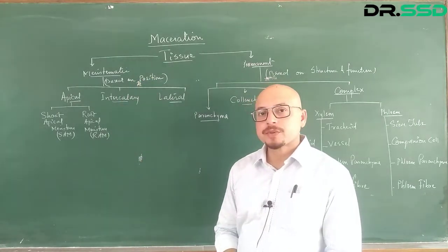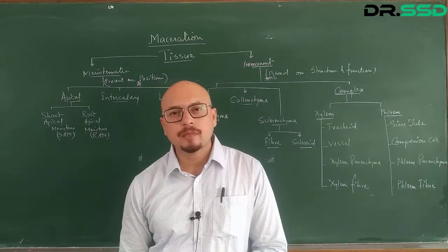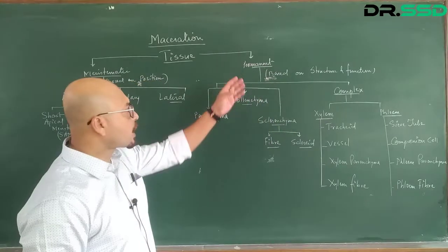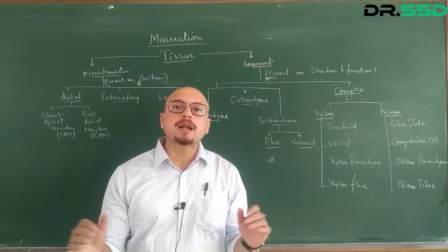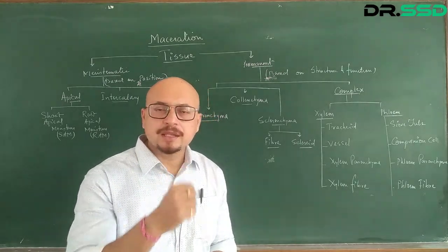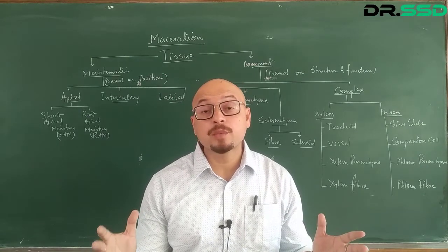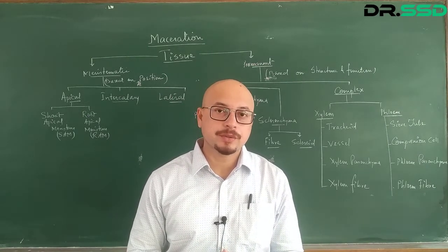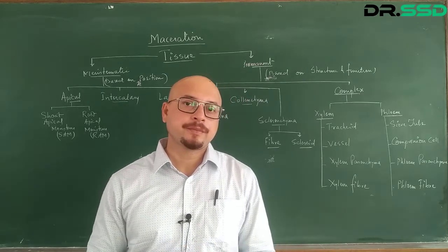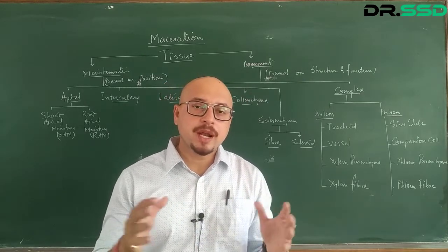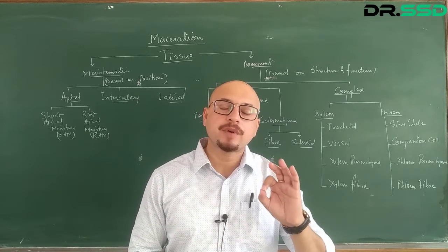Meristematic tissues are of three types depending upon their position. Now let's talk about permanent tissue. As the name suggests, permanent tissues are permanent — they don't divide normally. They can divide when you apply some type of hormones, but that is exceptional. Normally, permanent tissues don't divide. They are mature enough.